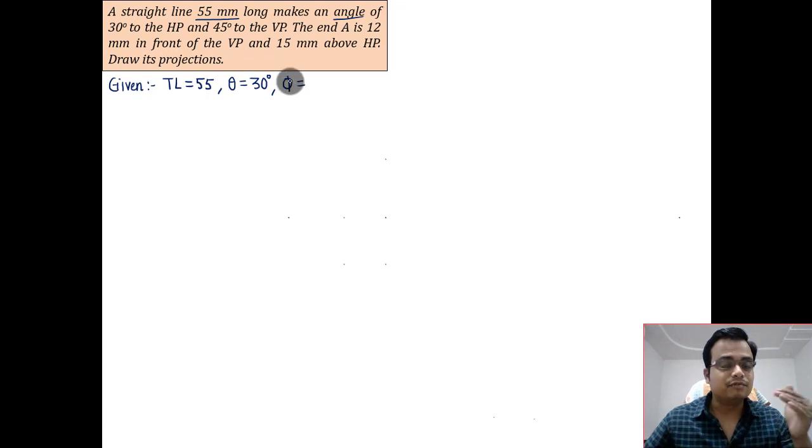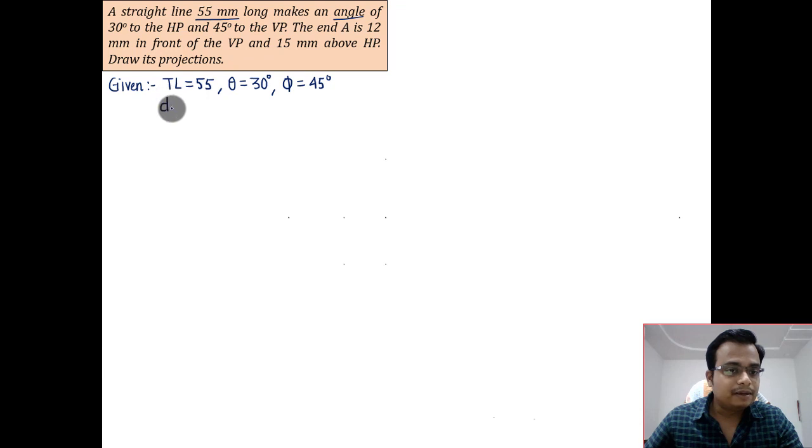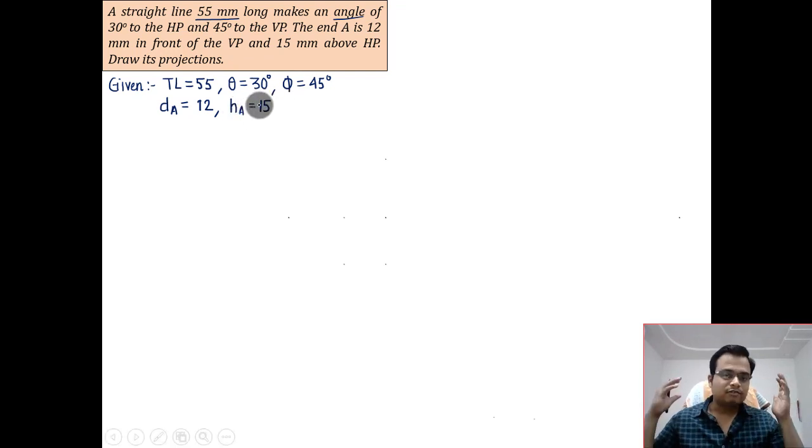Apart from that, the end A of the line is 12 mm in front of the VP. Any distance associated with VP is denoted by D, so D for point A is equal to 12. At the same time, that same point is 15 mm above the HP, so H for point A is equal to 15 mm. This is all the data that we have.